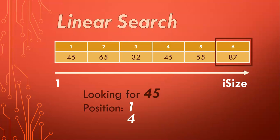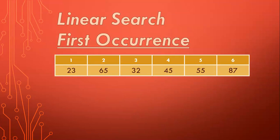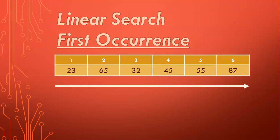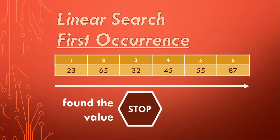But let's take a different scenario. Let's say we're trying to find a value where we want to find the first occurrence, or if we know for a fact that the array won't have duplicates. Those are the two scenarios. If that's the case, we still want to look from the beginning to the end, but we want to stop at a particular time — when we find what we are looking for, we must stop.